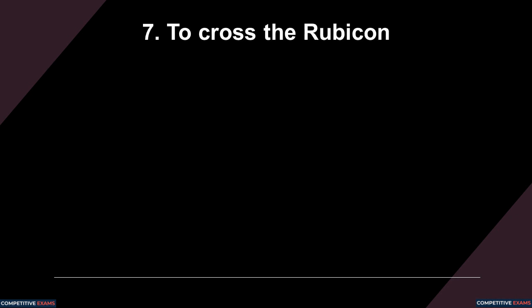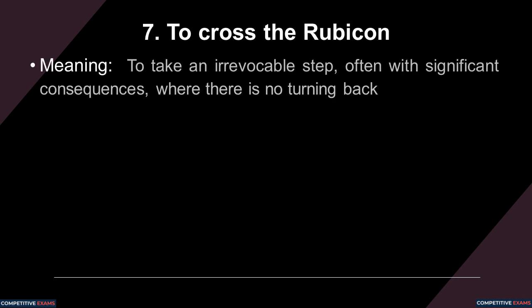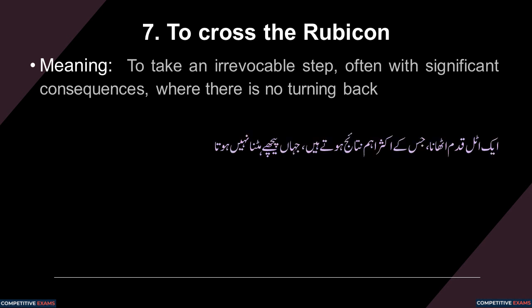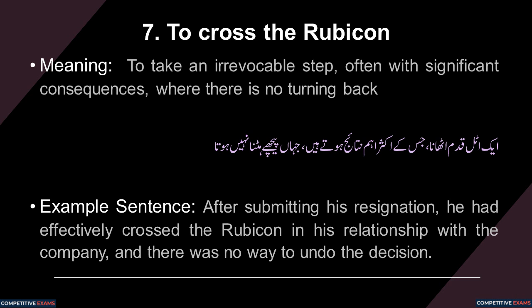To cross the Rubicon. It means to take an irrevocable step, often with significant consequences, where there is no turning back. Yanni ek atal qadam utana jiske akhtar ahem nataj hoote hai aur jaha se piche hatna nahi hota. Example sentence: After submitting his resignation, he had effectively crossed the Rubicon in his relationship with the company and there was no way to undo the decision.